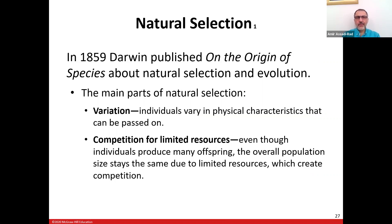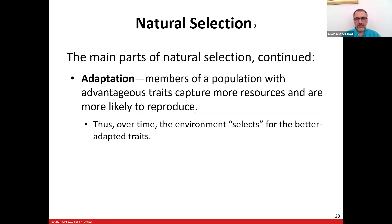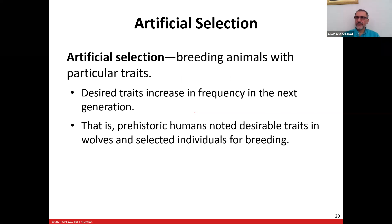Darwin published his book 'The Origin of Species' in 1859 — make sure you know that. He talked about variations within a population: those that cannot survive die, and those that can survive carry on their genes to the next generation. There is also competition for limited resources. Artificial selection is when humans recognize desirable traits — like animals that give more wool or milk — and breed them together.